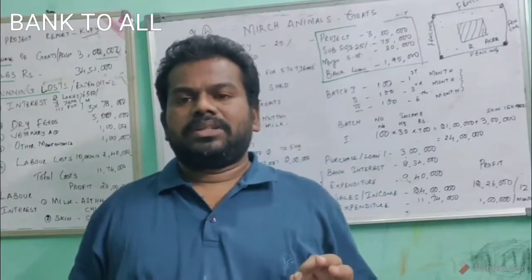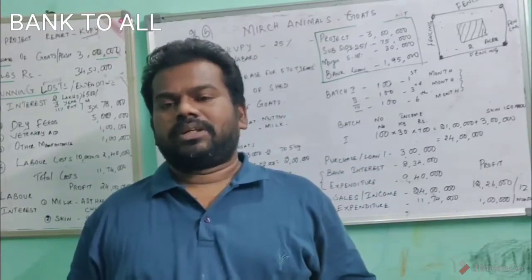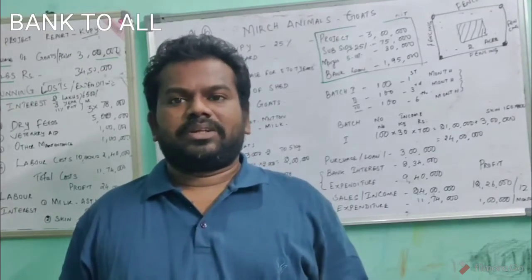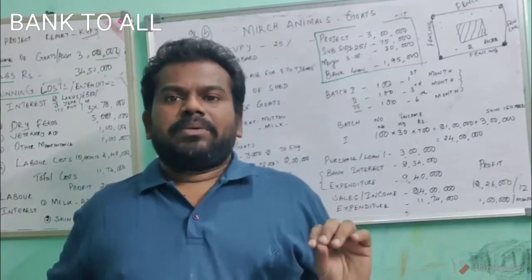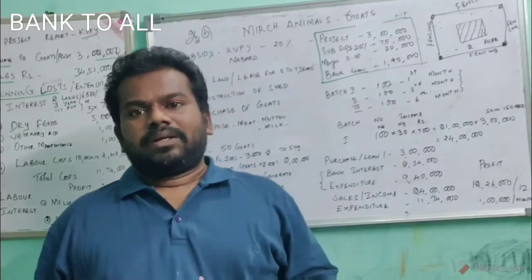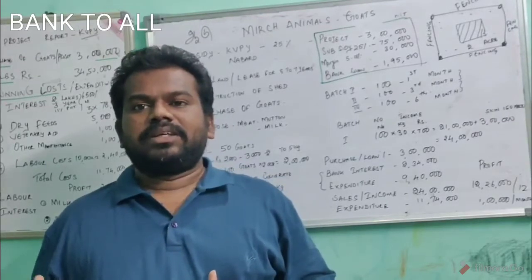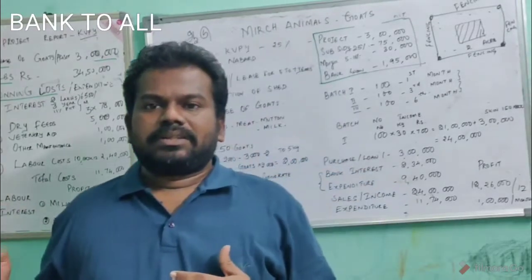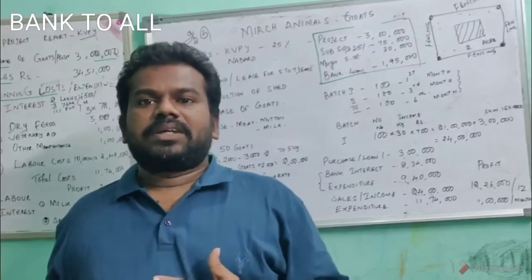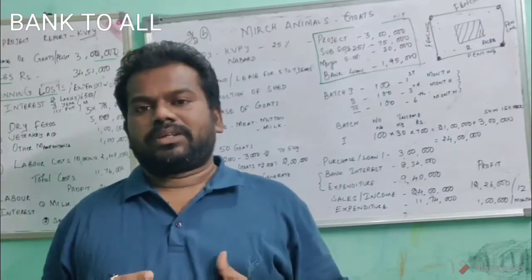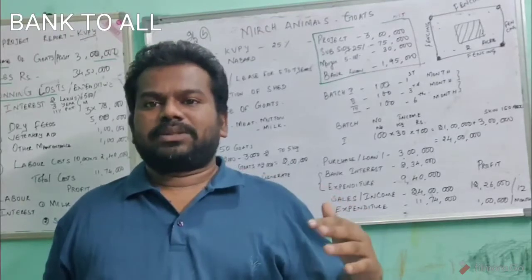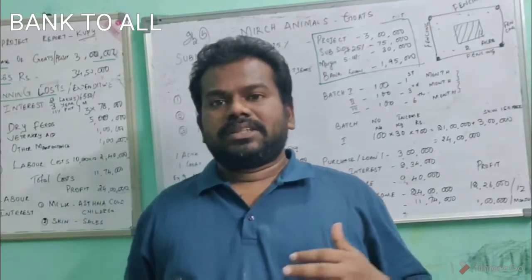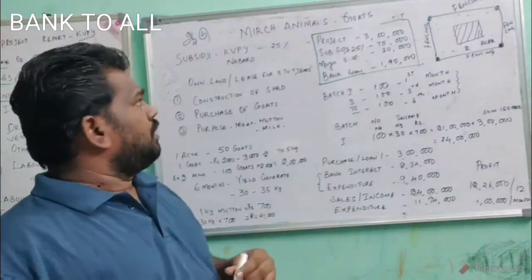Now we will see goat farming. Nowadays it is giving very good income. Normally one kg of mutton at the mutton shop is seven hundred to eight hundred rupees. When we buy a baby goat and develop it, it will take nearly six to seven months. Within six or seven months it will start yielding and will be nearly 30 kg. When we sell at that time we will get very good income. We will now see what the expenditure will be, how much the income is, what the profit is, and what the interest is.